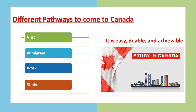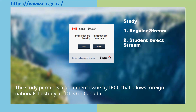There are different pathways to come here to Canada. One is you can come here as a visitor, you can immigrate, secure a work permit, or secure a study permit. The study permit is not a visa and it does not by itself allow you to travel to or enter Canada. You may also need a visitor visa or an electronic travel authorization, an ETA.